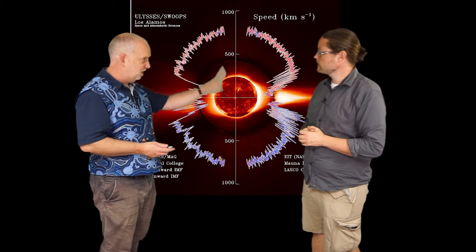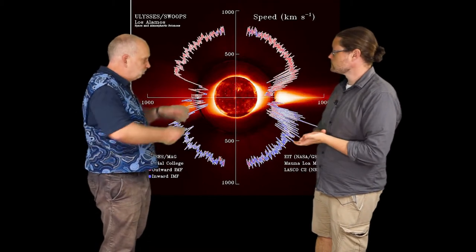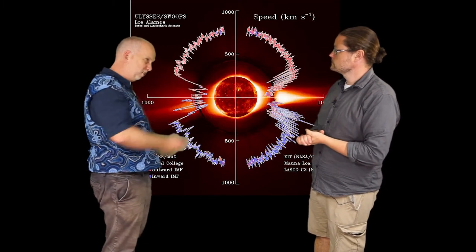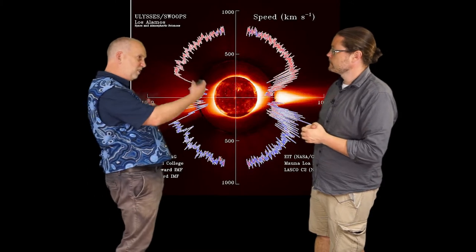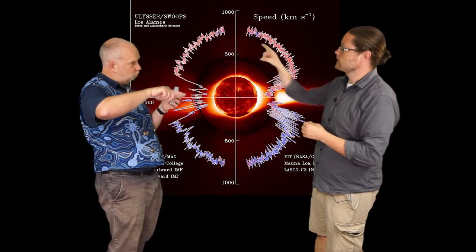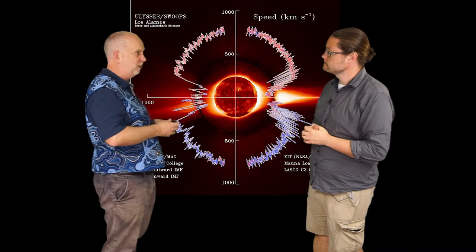And what you saw was near the poles there was a steady, fairly fast wind. That's because the magnetic field lines point straight out, so the gas can just escape there. Near the equator, the wind is slower because you've got the field lines that loop in and out, and that kind of traps the gas and stops it getting out so easily.